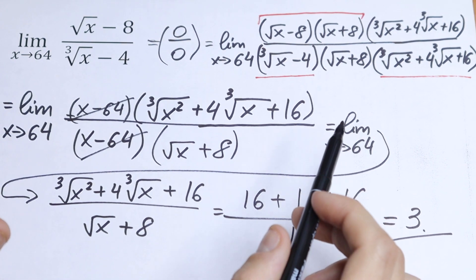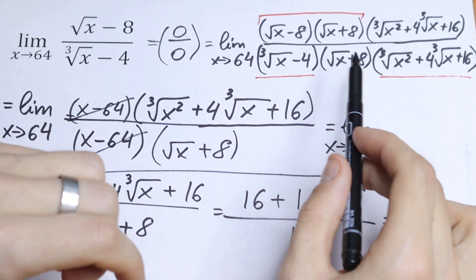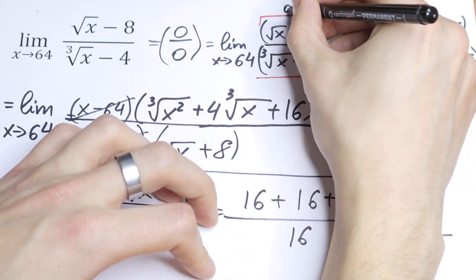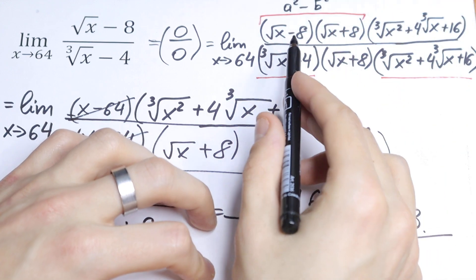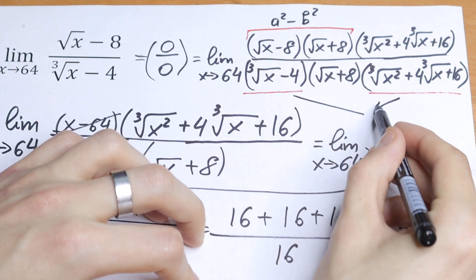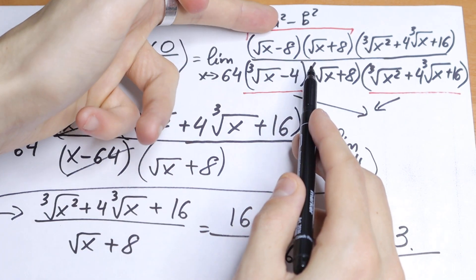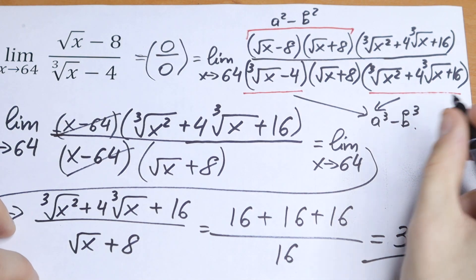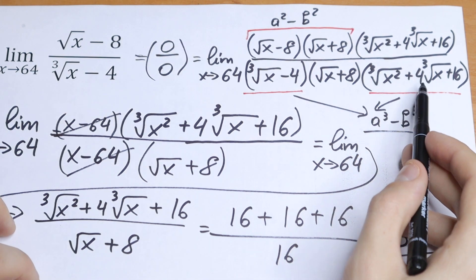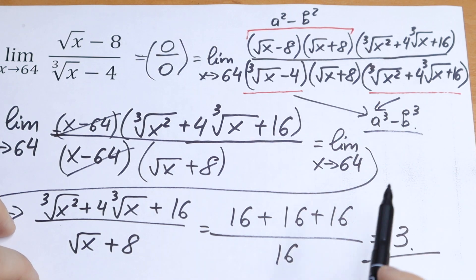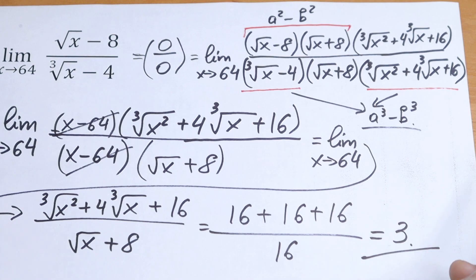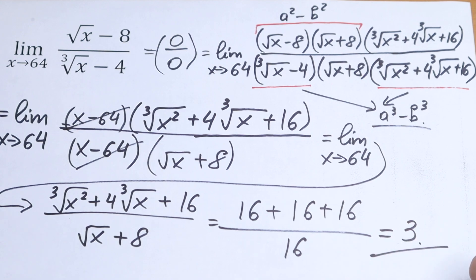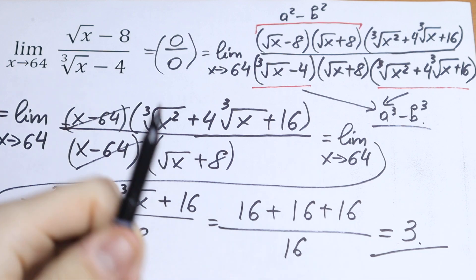If you have any questions or suggestions, write them in the comments. This is a little complicated because we need to multiply by the conjugate twice — once using the difference of squares formula (a squared minus b squared), and once using the difference of cubes formula (a cubed minus b cubed). Put a thumbs up, subscribe for more videos. I really appreciate it, and see you in the next video!